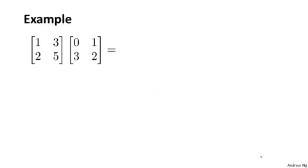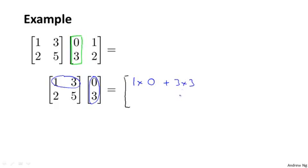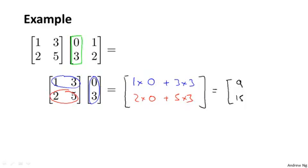Let's look at one more example. I want to multiply together these two matrices. First I pull out the first column of matrix B and compute this matrix times that vector. That's 1, 3 dot 0, 3 giving 1×0 + 3×3 = 9, and 2, 5 dot 0, 3 giving 2×0 + 5×3 = 15. So the first column result is 9, 15.